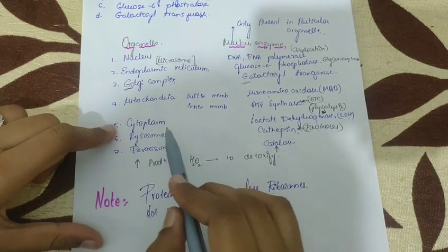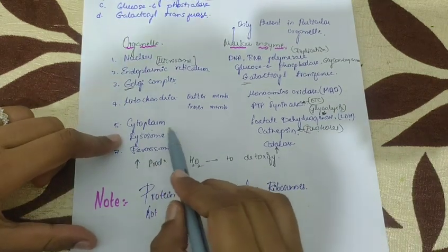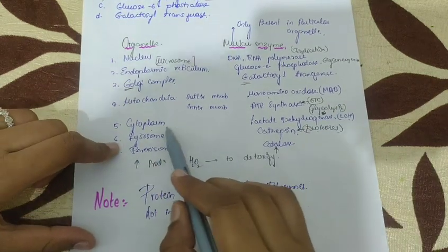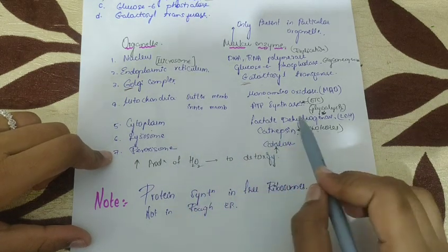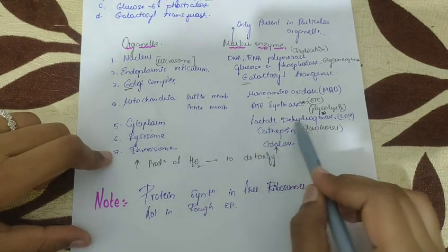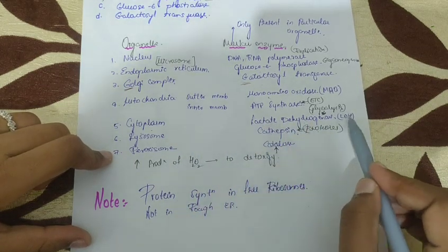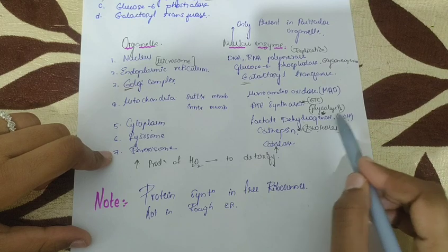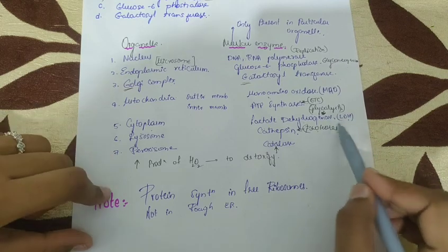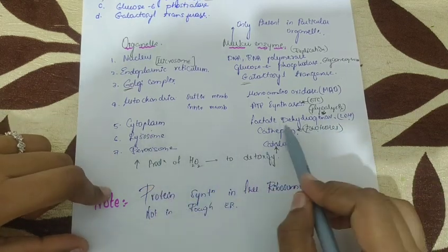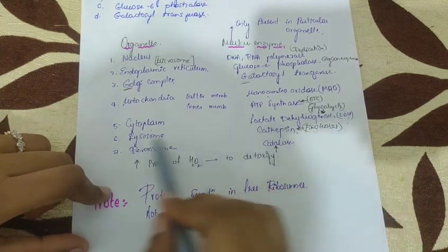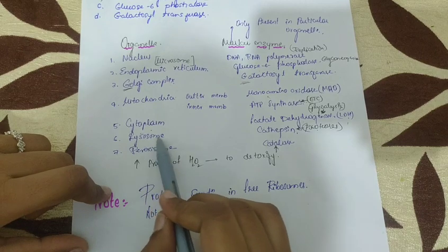For the cytoplasm, glycolysis takes place in the cytoplasm, and lactate dehydrogenase is one of the enzymes involved in glycolysis. So the marker enzyme for the cytoplasm is lactate dehydrogenase.